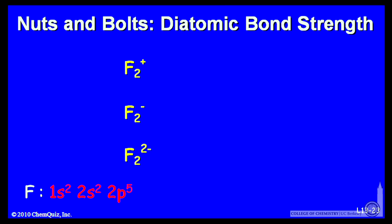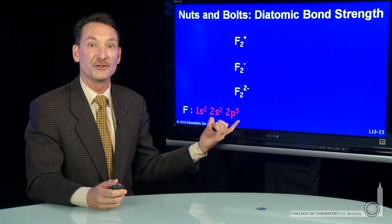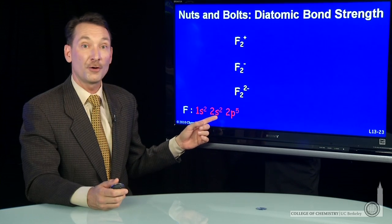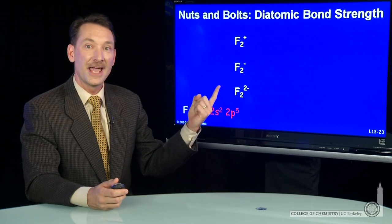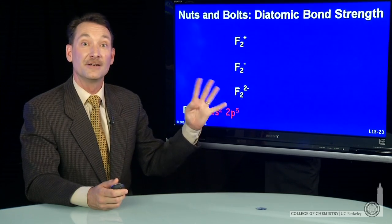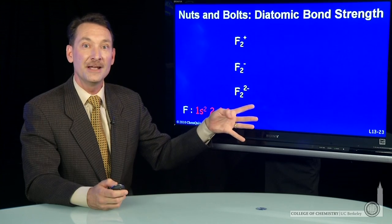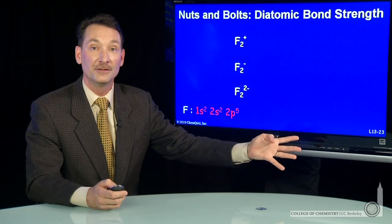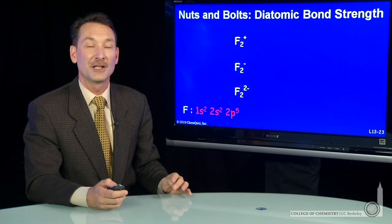Fluorine atoms have an electron configuration 1s2, 2s2, 2p5. So their valence orbitals are the principal quantum level 2 and four total orbitals: an s and px, py, pz. Four orbitals from each fluorine makes the fluorine molecule have eight molecular orbitals.